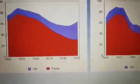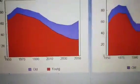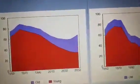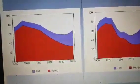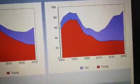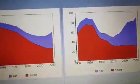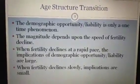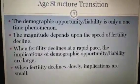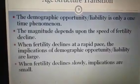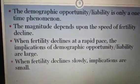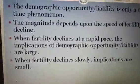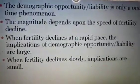Looking at the dependency ratio graph — the blue line represents old-age dependency and the red represents youth dependency — you can see India's and China's graphs. In India around 2000, youth dependency is still high but old-age dependency is low. But in China old-age dependency is high because life expectancy is high in China. This is the difference between India and China's demographic features, and hence we can see the demographic opportunity or liability. Demographic opportunity or liability is a one-time phenomenon, and its magnitude depends on the speed of fertility decline. When fertility declines at a rapid pace, the implications are large; when it declines slowly, implications are small.